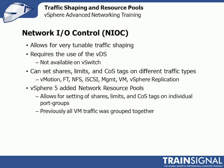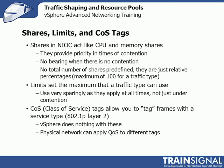Shares in NIOC act like CPU and memory shares — they provide priority in times of contention. That's a key point: shares don't mean anything if there's no contention. If vMotion has really low priority but there's no VM traffic going across the connection, vMotion can burst up and use what it wants. There's no total number of shares predefined — the maximum for any specific traffic type is 100. But you could give every type 100, plus all your resource pools 100, and have 2,000 shares out there. That just means vMotion is really only going to get 1/20th, or about 5%, if everything is under contention.